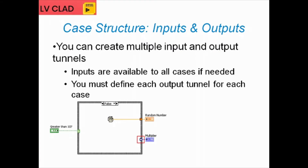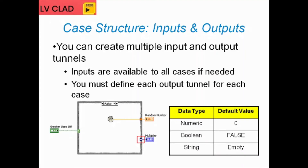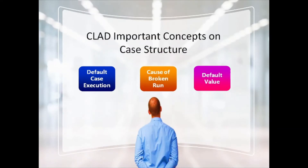Another important point is the tunnel. You can connect a number of inputs as well as outputs, but you have to manage the tunnel properly, or else that is going to be a big issue during compilation. If there is no source to provide a value to the indicator, you should use 'default if unwired.' For a numeric indicator, zero will be displayed; for a boolean, it will display false; and for a string, the default value is an empty string.